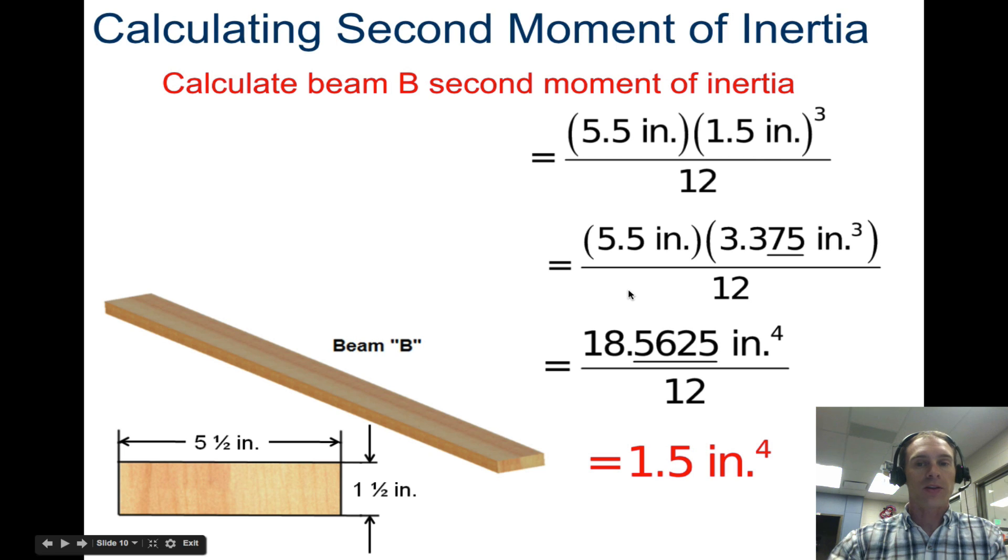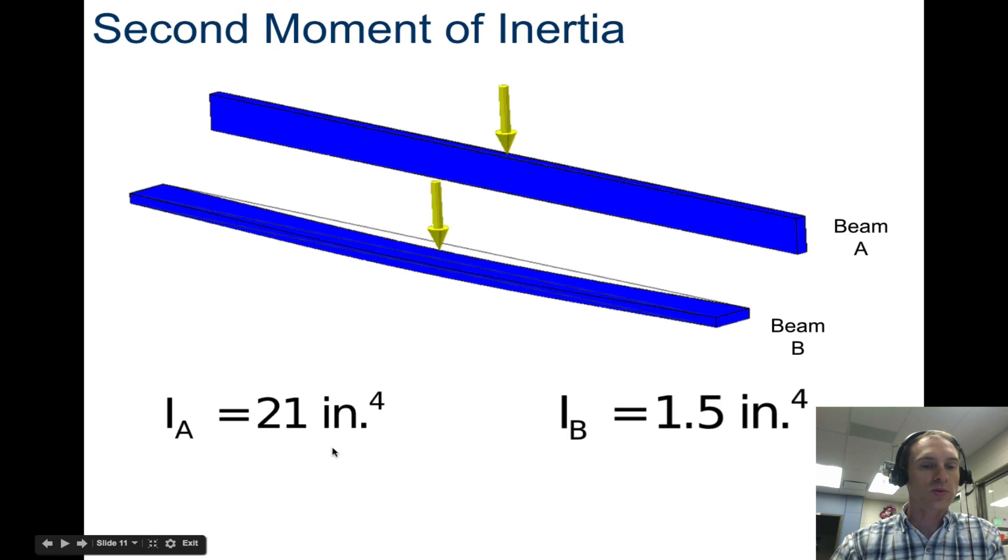If we take a look at it in the other dimension, five and a half times 1.5 cubed gives you 1.5 inches to the fourth. That is a huge difference, 21 inches to the fourth versus 1.5 inches to the fourth.